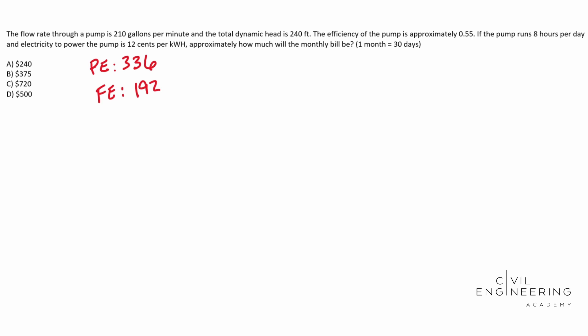So you'll notice a discrepancy between these two formulas. In the PE, it gives you BHP is equal to our flow rate times our gamma times our head over 550 times N times our efficiency of our pump.